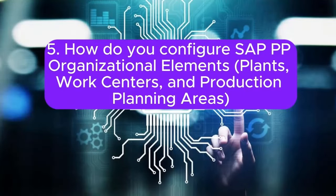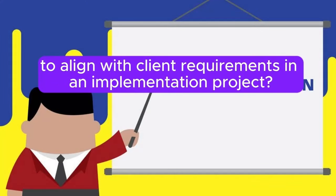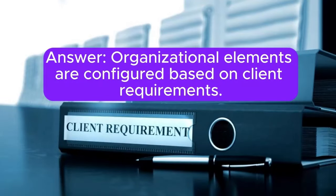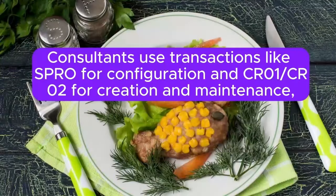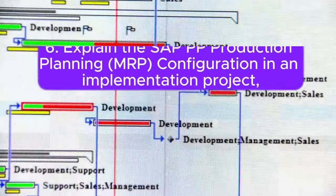Question 5: How do you configure SAP PP organizational elements — plants, work centers, and production planning areas — to align with client requirements in an implementation project? Organizational elements are configured based on client requirements. Consultants use transactions like SPRO for configuration and CR01/CR02 for creation and maintenance, aligning organizational elements with the client's production structure.